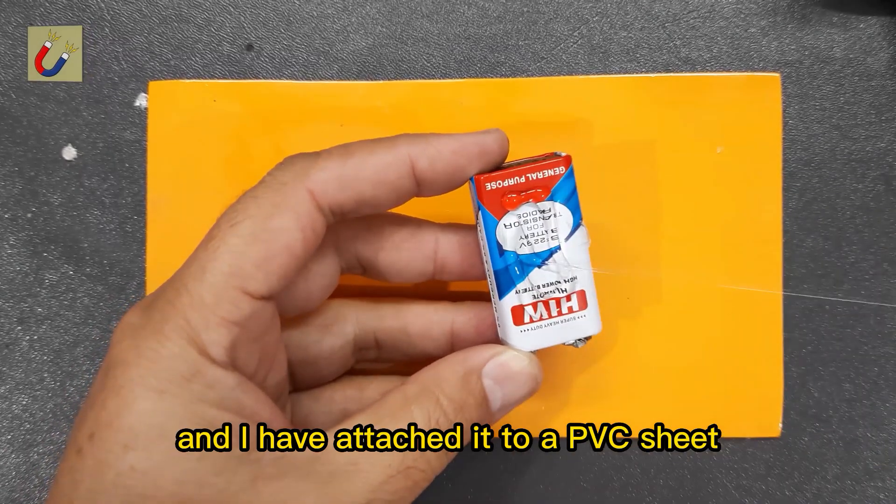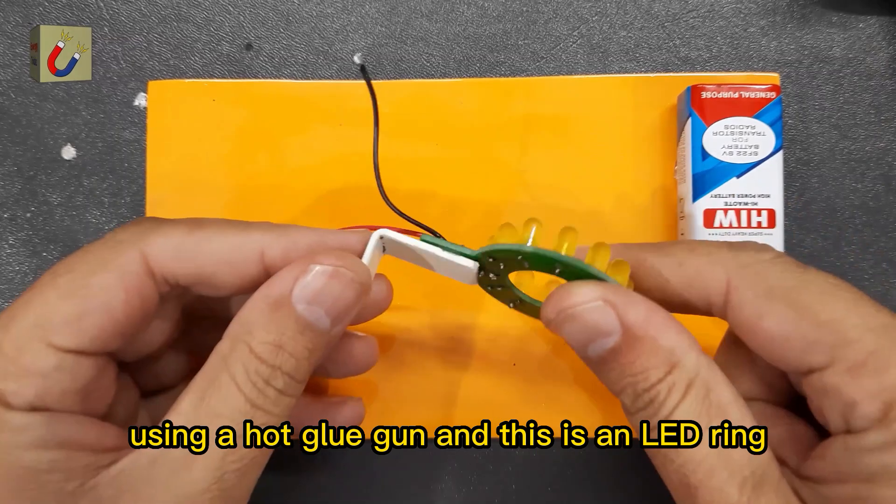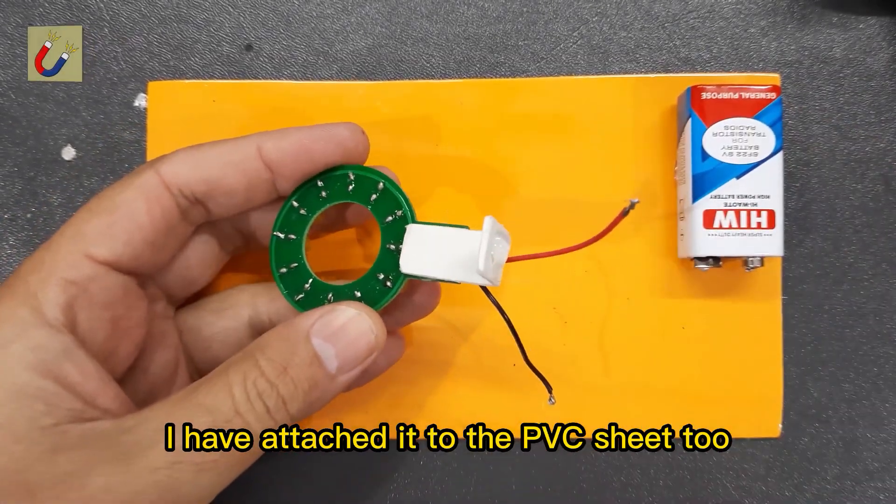I have a 9-volt battery, and I have attached it to a PVC sheet using a hot glue gun. And this is an LED ring. I have attached it to the PVC sheet, too.